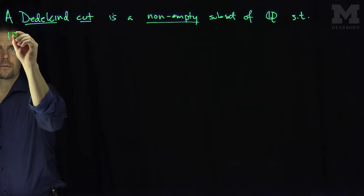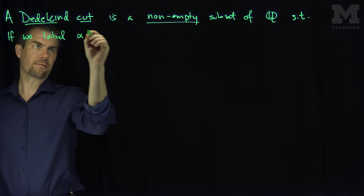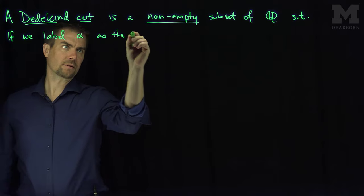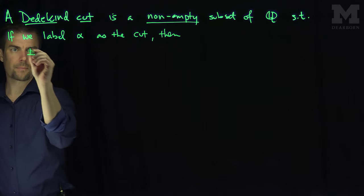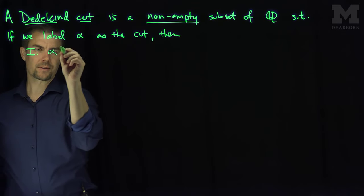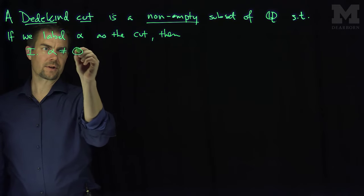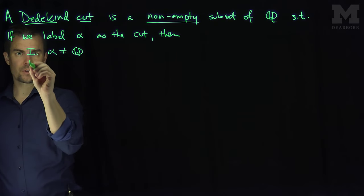If we label alpha as the cut, then property one is that it's not empty by the assumption and that this cut alpha is not the entire set of rational numbers.